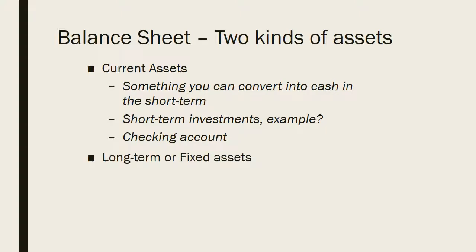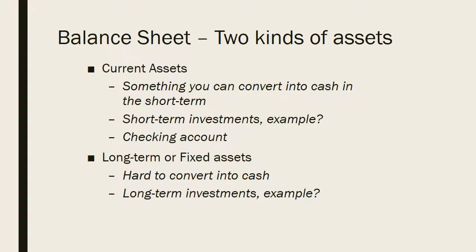The second category is a long-term asset, or a fixed asset. These are items that are a little bit harder to convert into cash. What would be an example of a long-term asset? Well, you could think of a house. It's relatively difficult to sell a house — you can't do it in a day or two, it takes time. And if you want to sell it quickly, you'd have to perhaps discount the price and not get your full value out of it. So it's harder to make it liquid.